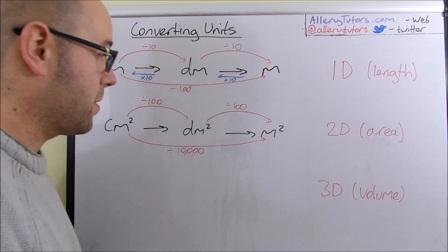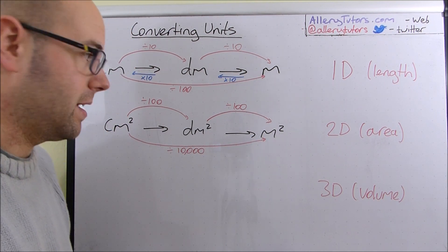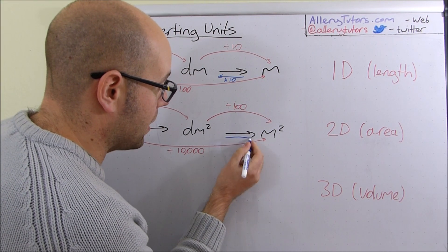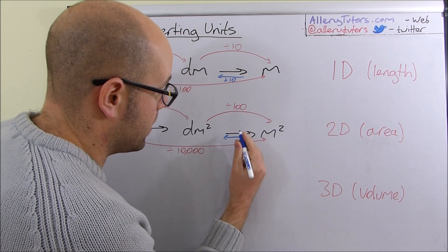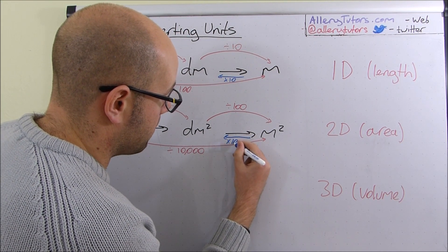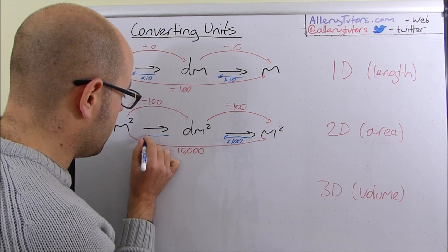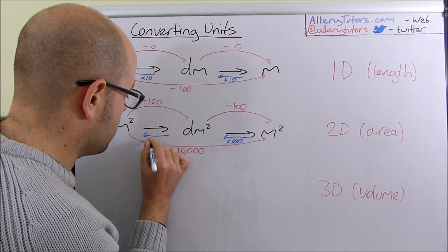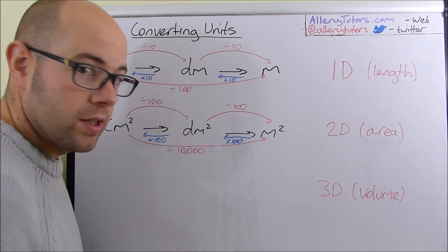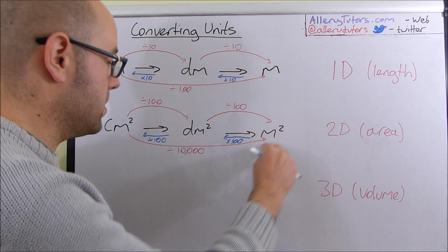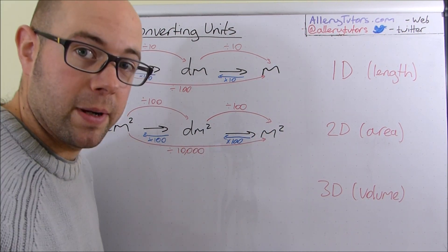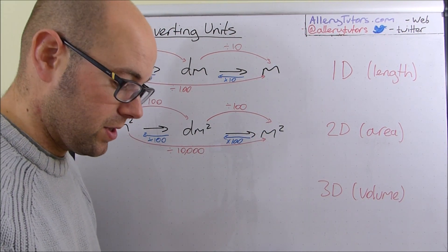Going backwards it's exactly the same thing, except we're going to multiply. So that's multiplied by 100, and that one is also multiplied by 100. And if we want to go from metres squared to centimetres squared, that'll be multiplied by 10,000. Same principle.